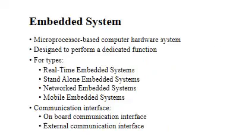An embedded system is a microprocessor-based computer hardware system with software that is designed to perform a dedicated function, either as an independent system or as part of a larger system. At the core is an integrated circuit designed to carry out computation for real-time operations. Based on performance and functional requirements, it is divided into 4 types: real-time embedded systems, stand-alone embedded systems, network embedded systems, and mobile embedded systems. Embedded product communication interfaces can be viewed from two different perspectives: device or board level communication interface, called onboard communication interface, and product level communication interface, called external communication interface.